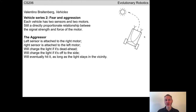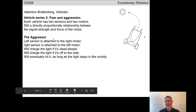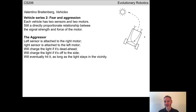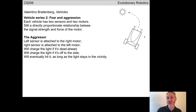In chapter two, Braitenberg introduces a pair of vehicles. The first, 2a, he refers to as the Aggressor. It has more or less the same structure as Vehicle 1, but with two sensors — front left and front right — and two motors — back left and back right. It has two wires: one connecting the left sensor to the right motor, and another connecting the right sensor to the left motor. This is known as contralateral connections — 'contra' meaning across, 'lateral' meaning along the line of the body. Your visual pathways are also contralateral: signals from your right eye are processed at the back left of your skull, and vice versa.